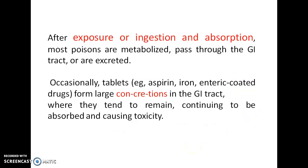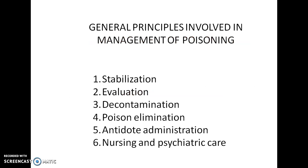In such conditions, how do we manage the situation? After exposure, ingestion, and absorption of most poisons, they will undergo metabolism, pass through the gastrointestinal tract, and eventually get excreted. During the half-life period, they show some deleterious effects on the tissue system. Occasionally, substances like aspirin, iron, or enteric-coated drugs may be present in larger concentrations in the GI tract and keep getting absorbed, thereby causing toxicity.